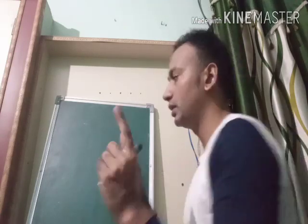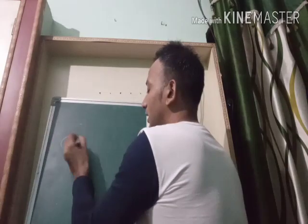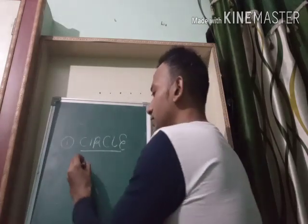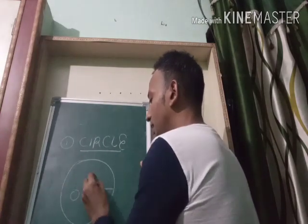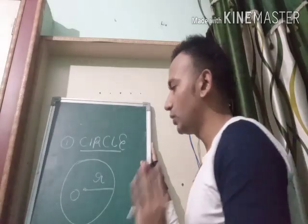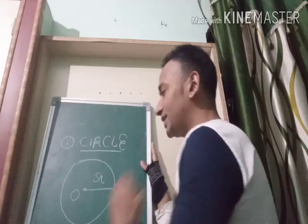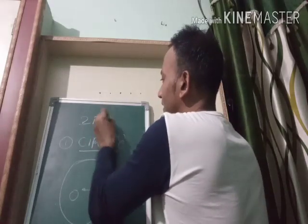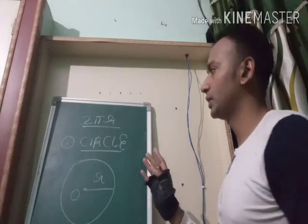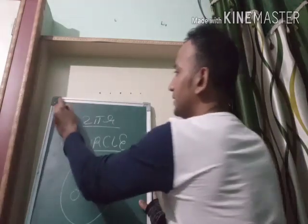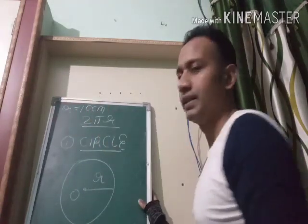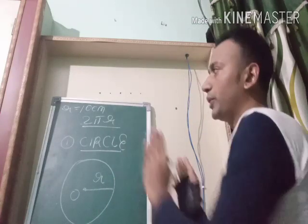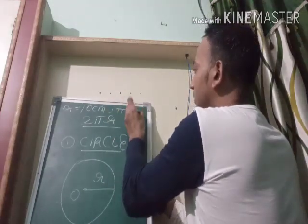The first formula we are revising is related to a circle. Suppose we are having a circle with center O and radius R. I want you to find the circumference of the circle. The formula for circumference of a circle is 2πr. Suppose we are having radius 10 cm. By putting R equal to 10 cm, you can calculate the circumference. The value of pi is 22 upon 7.